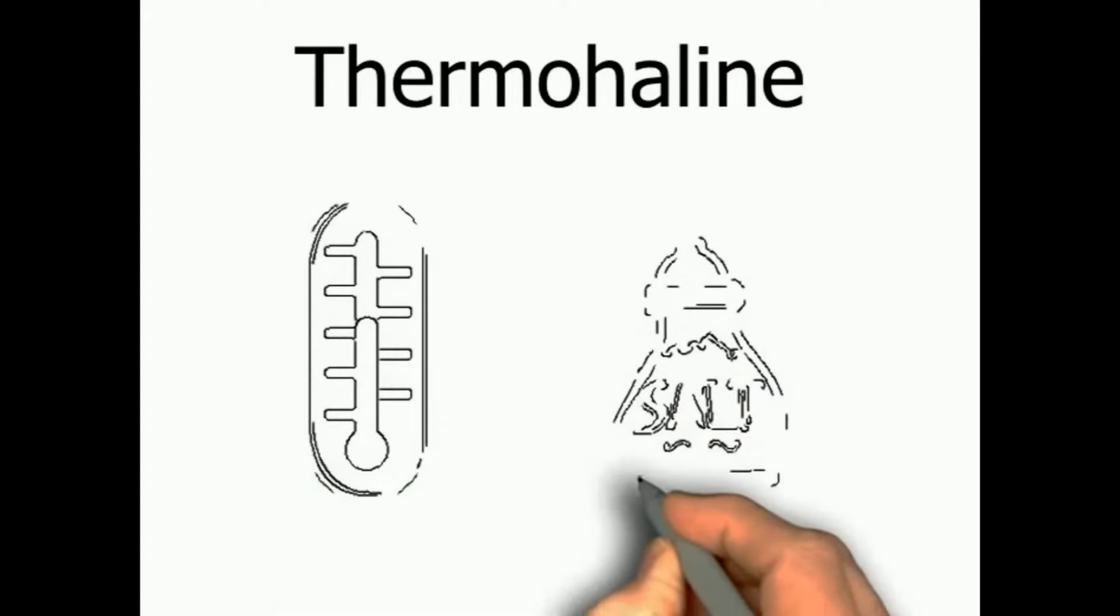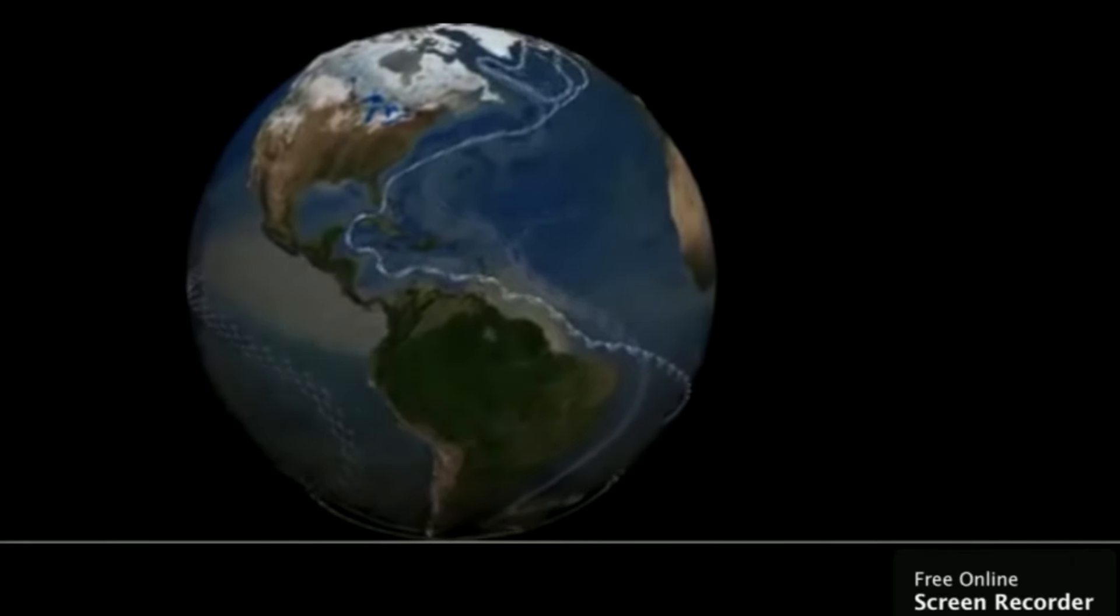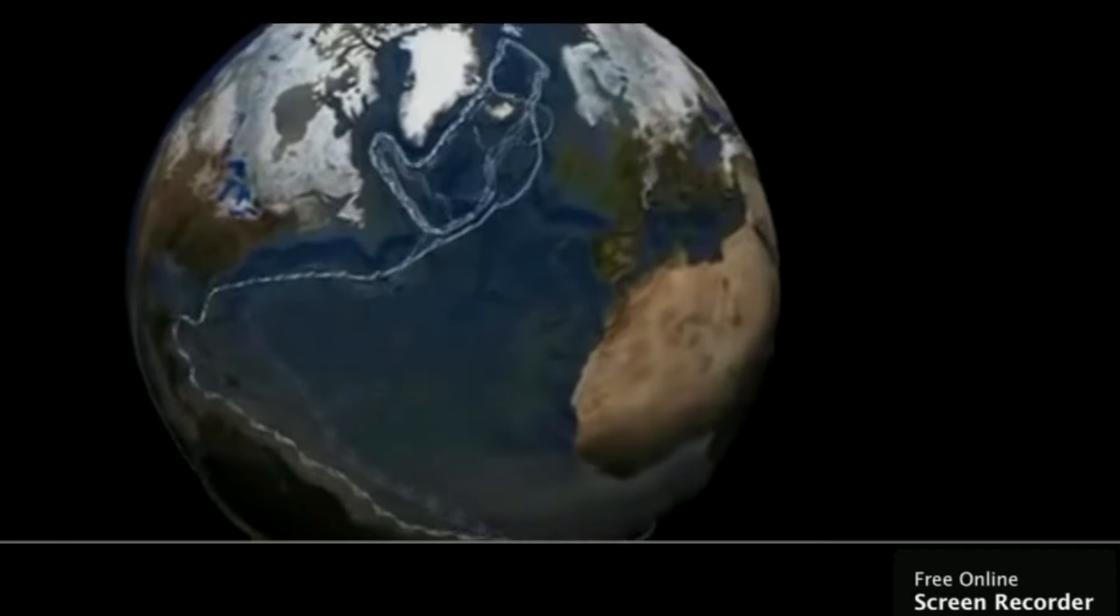Cold water is more dense than warm water and water of high salinity has a greater density than less salty water. These changes in temperature and salinity create currents in the ocean.